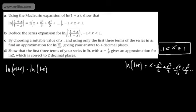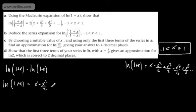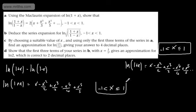So what we'll do is find the expansion we've got here for ln(1+x), and then subtract away the expansion of ln(1−x). Starting with ln(1+x), we know that gives us x − x²/2 + x³/3 − x⁴/4 + x⁵/5 ..., valid for x strictly greater than −1 and less than or equal to +1.